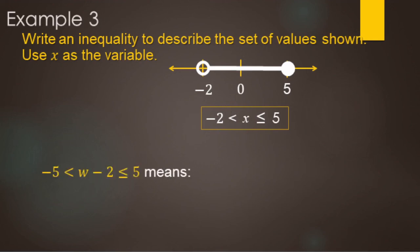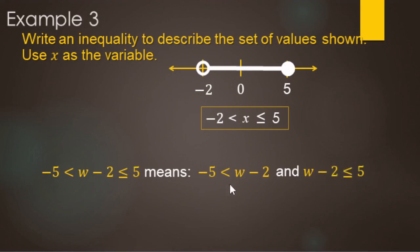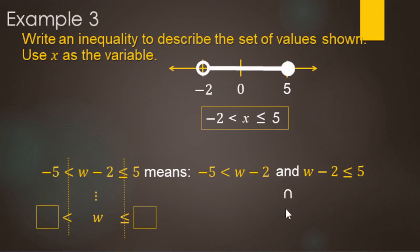Just remember: with these and-style compound inequalities, you can break them into two chunks and solve each separately, or you can solve it all together keeping the variable isolated in the middle. Also note that 'and' is a synonym for the intersect symbol, which we'll get into in the next video.